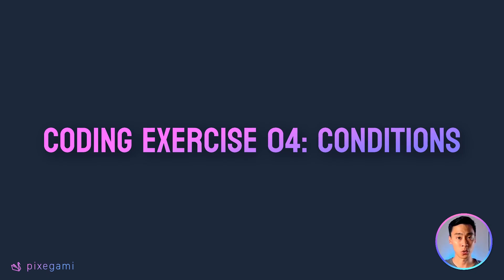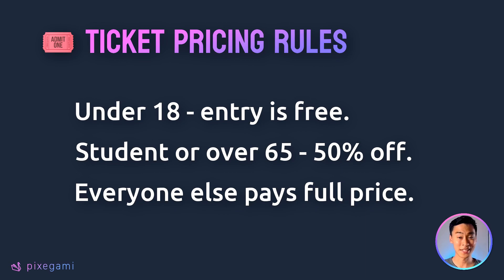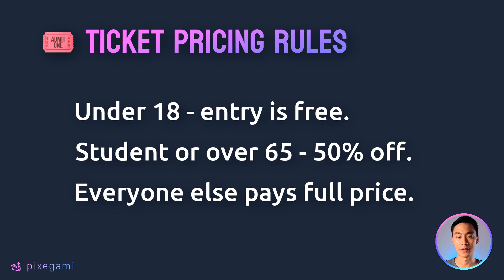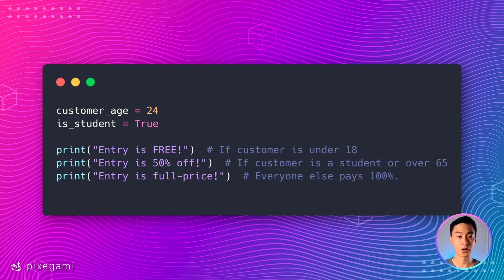Let's wrap this chapter up with a short coding exercise. Write a program for a ticketing system that checks the customer's age and whether they are a student, and displays the appropriate message based on these pricing rules: if they're under 18, entry is free; if they're a student or over 65, the ticket is 50% off; everyone else pays full price. Here's the starting code — fill in the conditions using if-else to print the correct message for any given customer age and student status. Pause the video to try it now, then resume to see one possible solution.